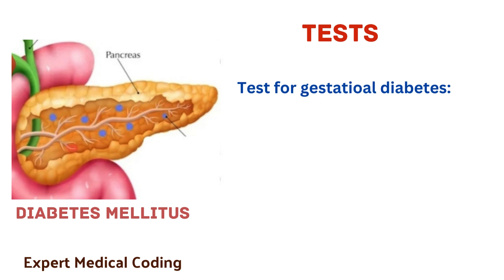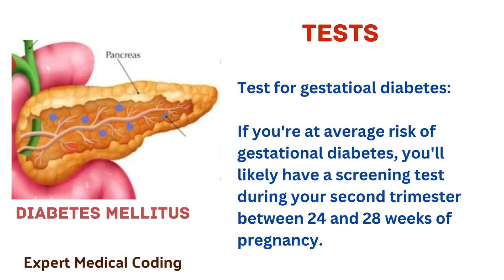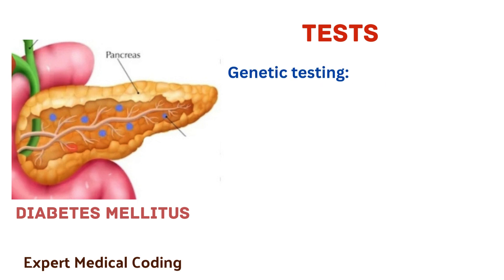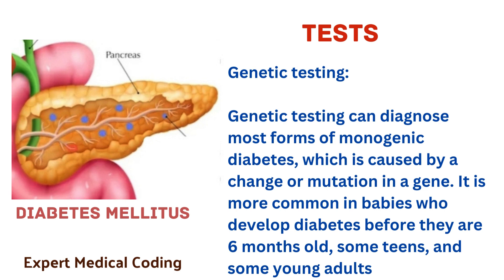Test for gestational diabetes: if you are at average risk of gestational diabetes, you will likely have a screening test during your second trimester between 24 to 28 weeks of pregnancy. The next test is genetic testing. Genetic testing can diagnose most forms of monogenic diabetes, which is caused by a change or mutation in a gene. It is more common in babies who develop diabetes before they are 6 months old, some teens and some young adults.